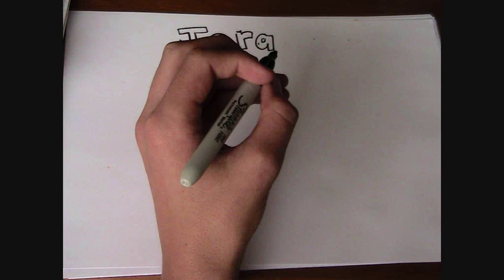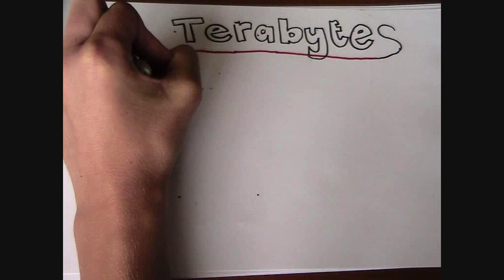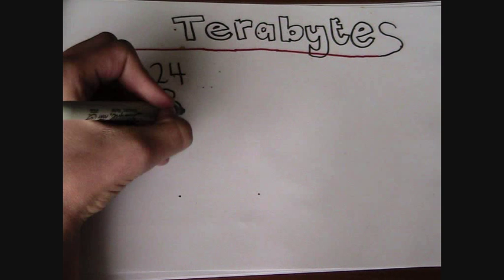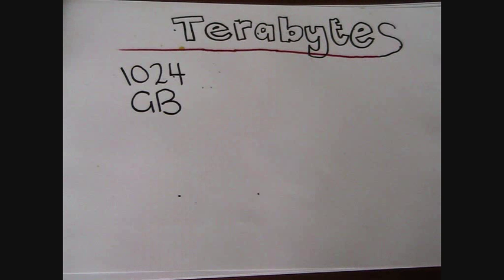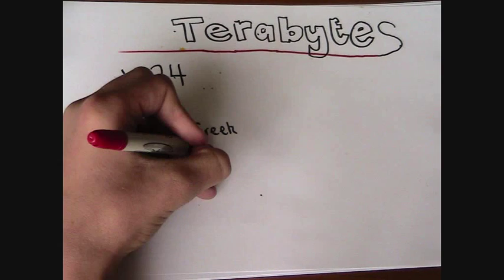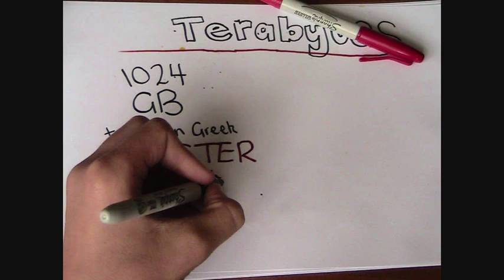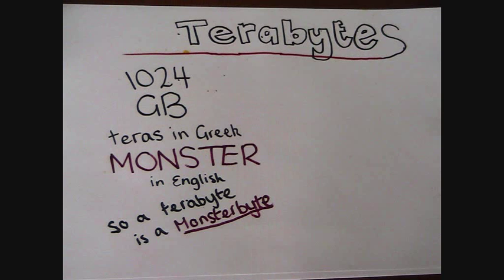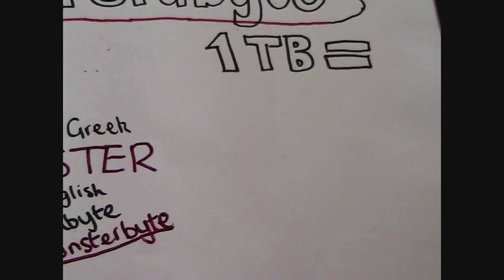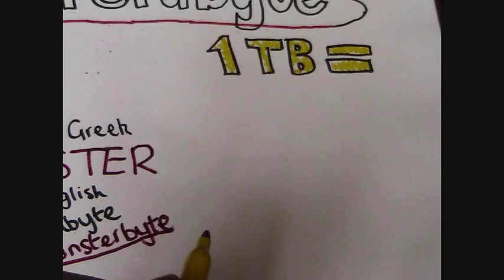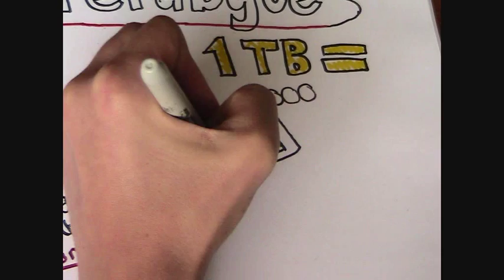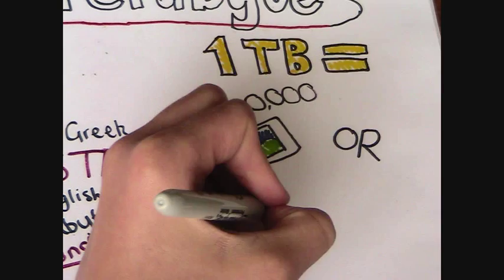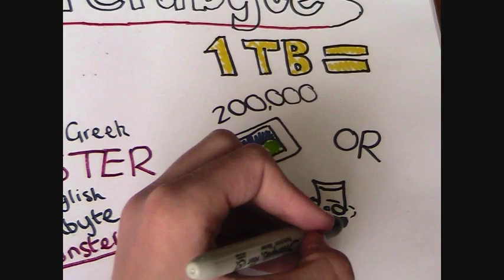Not bad, but it gets bigger. Terabytes are the next biggest, and they're equivalent to about 1024 gigabytes. Teras is a Greek word for monster, so in English a terabyte is a monster byte. A terabyte is equivalent to about 200,000 pictures or three years of MP3 music.